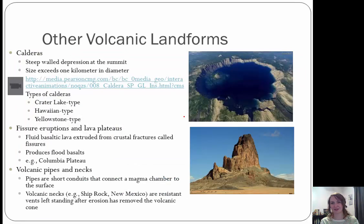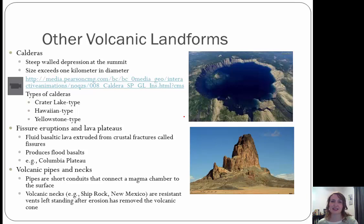Other volcanic landforms: first, calderas — those are summit openings greater than one kilometer in size, steep depressions at the summit. There are different types: crater lake type, Hawaiian type, and Yellowstone type. We also have fissure eruptions and lava plateaus: fluid basaltic lava extruded from crustal fractures called fissures, producing flood basalts, like the Columbia Plateau. We also have volcanic necks and pipes — pipes are short conduits connecting a magma chamber to the surface, and volcanic necks are resistant vents left standing after erosion removes the volcanic cone, as seen at Shiprock, New Mexico.